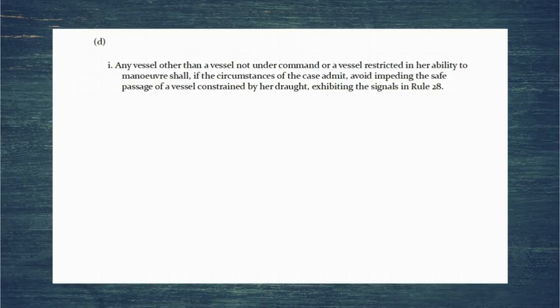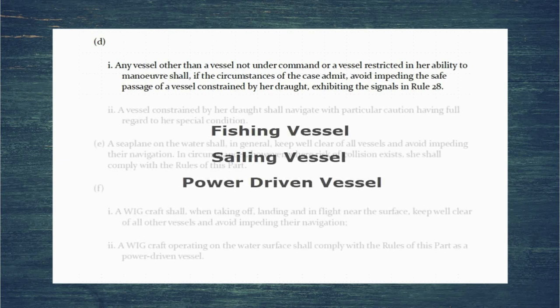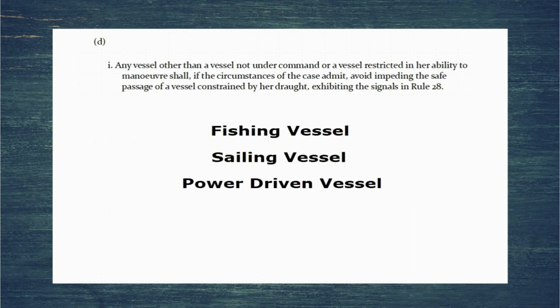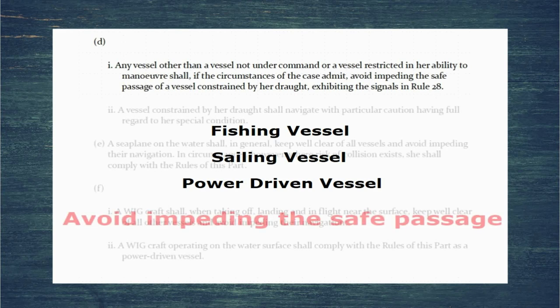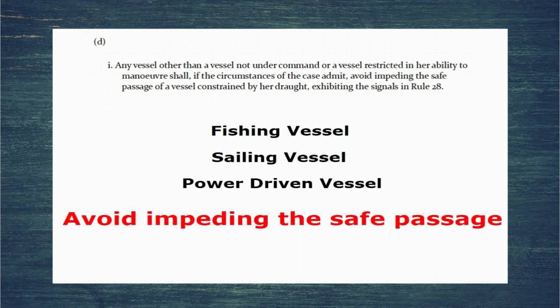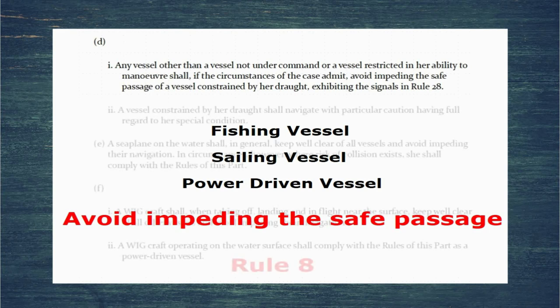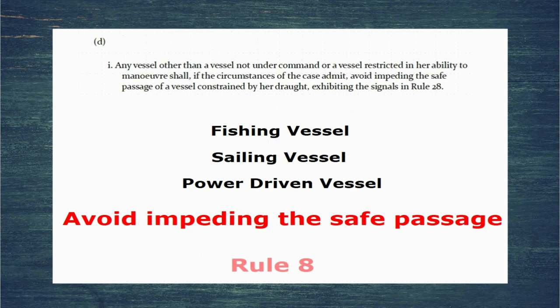Part D then goes on to say any vessel other than not under command or restricted in ability to manoeuvre needs to avoid impeding the safe passage of a vessel constrained by draft. This means fishing vessels, sailing vessels, and power-driven vessels all need to avoid impeding the safe passage of a vessel constrained by draft. What exactly this means is clarified in rule 8, which talks about action to avoid collision.